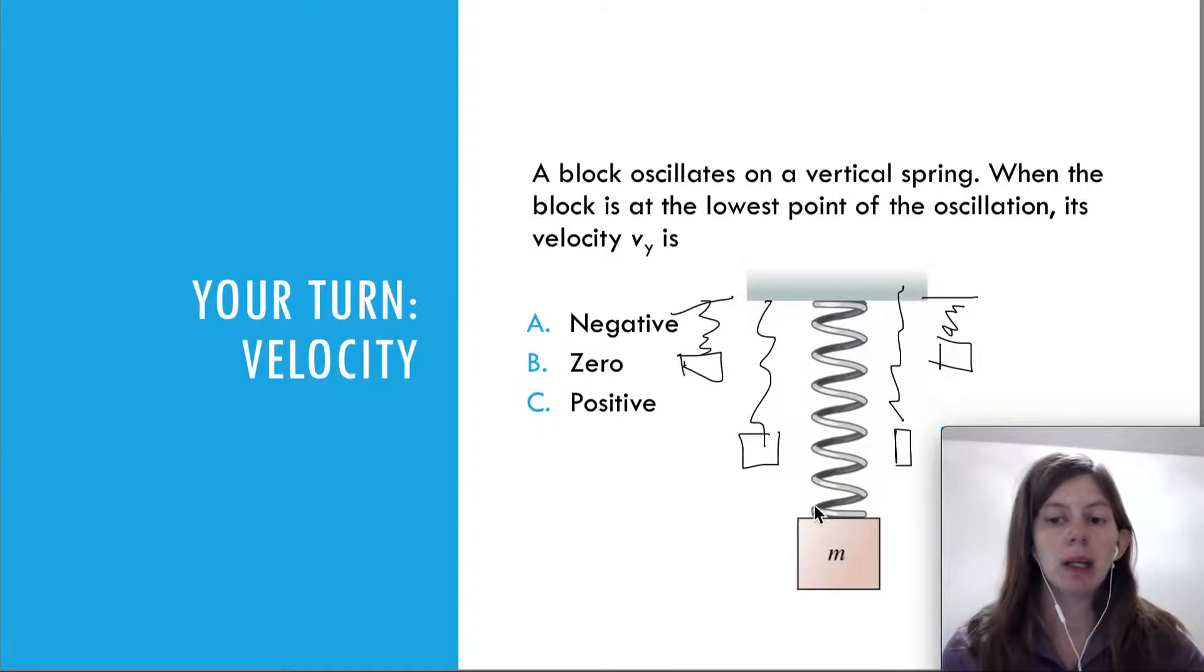So what's the velocity here? Well, whenever it has a maximum stretch or maximum compression, that means it stops because it's about to go the other way. So the velocity is zero, and this is shown from the velocity graph that we just talked about as well.